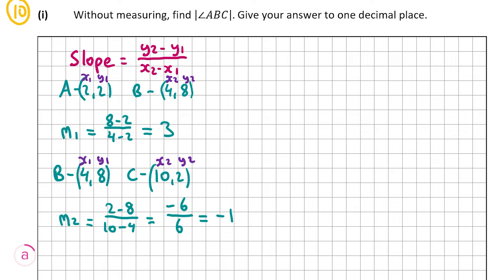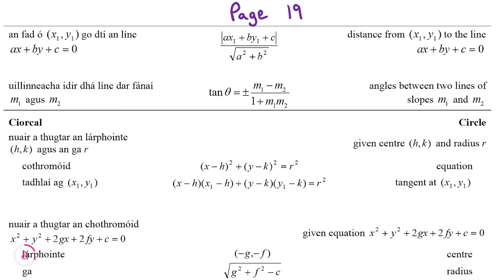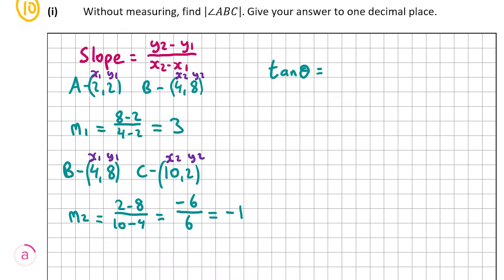Now that I have M1 and M2, I can use the formula for the angle between two slopes. It's on page 19: tan theta is equal to plus or minus M1 minus M2 over 1 plus M1 M2. So M1 is 3, giving us 3 minus M2, which is 3 minus minus 1. It's important that you have minus then minus 1, as there's a difference between 3 minus 1 and 3 minus minus 1. That's over 1 plus 3 times minus 1. Now, we know it's in the first quadrant, which means it has to be positive, so we're going to take the absolute value.